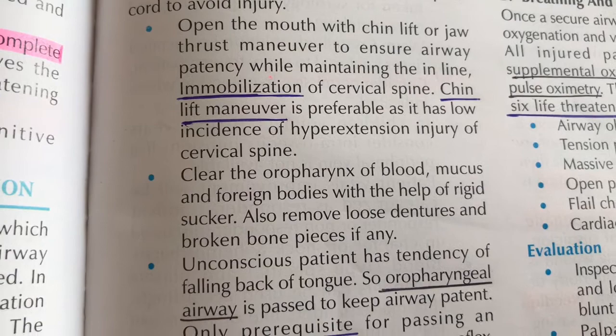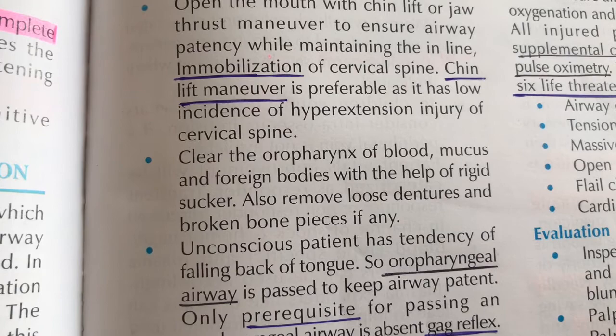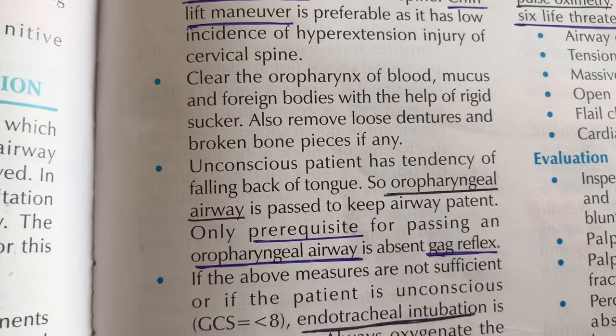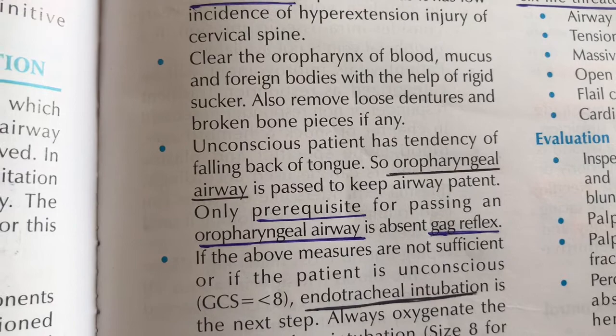After opening the mouth, we check whether the airway is blocked by blood, mucus, sputum, or a foreign body. If there is a foreign body in the oropharynx, we suction it. In an unconscious patient, a major cause of airway obstruction is the tongue falling back. We therefore pass an oropharyngeal airway to keep the airway patent.